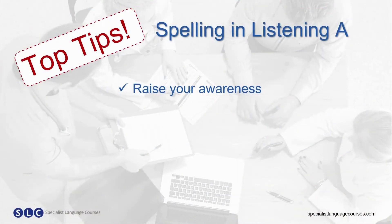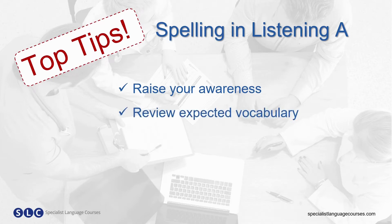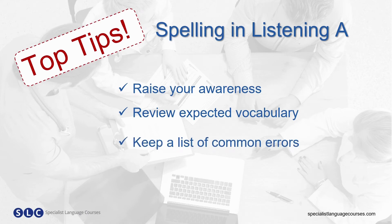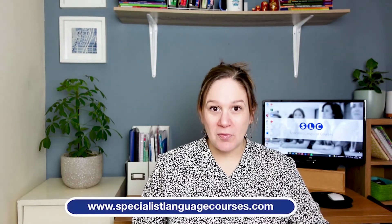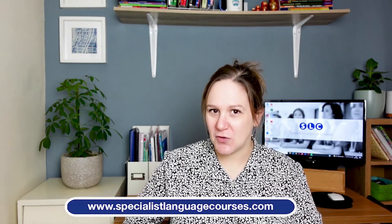Top tips for spelling for Listening A: Raise your awareness so you know different ways of spelling the same sound — it might help you spot errors. You have two minutes at the end of the Listening Exam to check your answers, and it's a good idea to use those two minutes to check your spelling. Review expected vocabulary so you can write accurately, confidently and quickly in the exam. Keep your corrected errors in a prominent place. Which two words do you find difficult to spell? Let me know in the comments below. Be sure to check out our website — we've got the perfect OET preparation course to help you pass your exam. Click on the information icon at the top to view our playlist. See you next time!